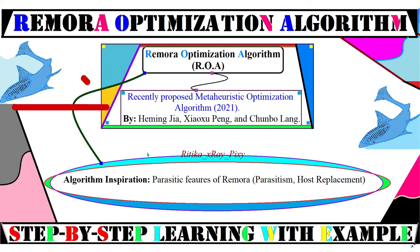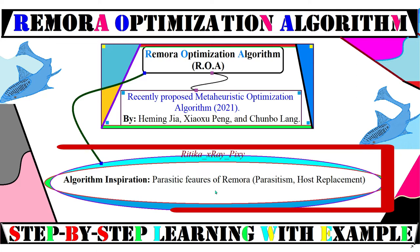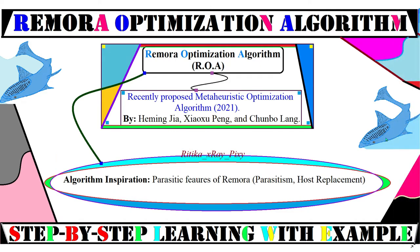As you can see here, the Remora Optimization Algorithm is a recently proposed bio-inspired metaheuristic optimization algorithm, proposed in the year 2021. This algorithm is basically inspired by the intelligent parasitic behavior of remora and random host replacement of remora. The parasitic behavior and the host replacement of remora play the major role, so first we will understand the remora behavior, lifestyle, parasitic behavior, host replacement, and other activities.